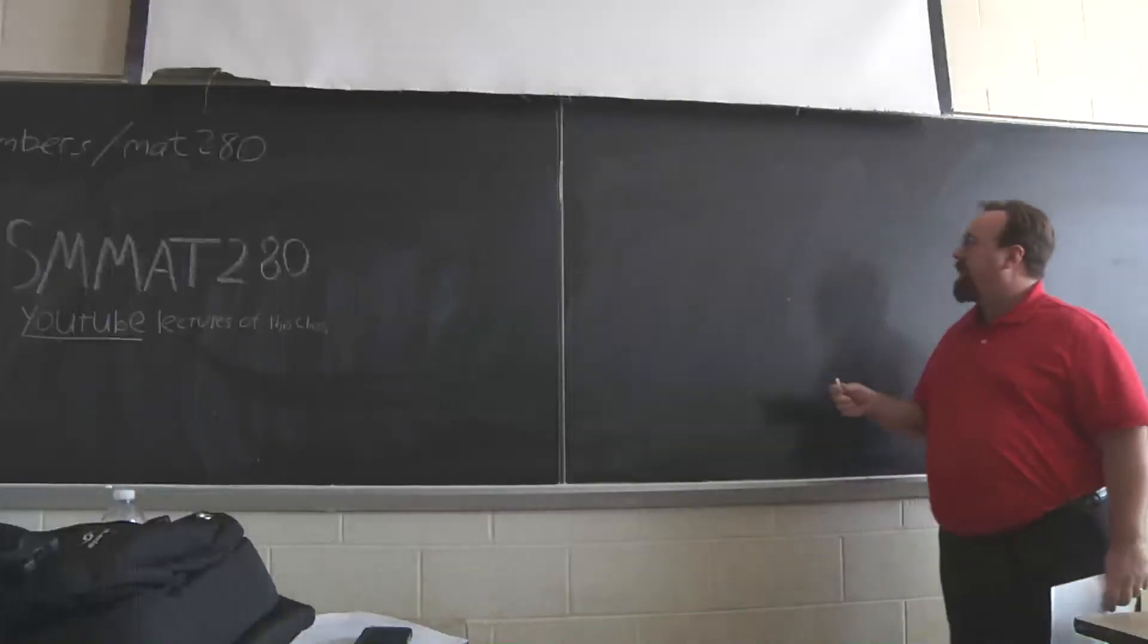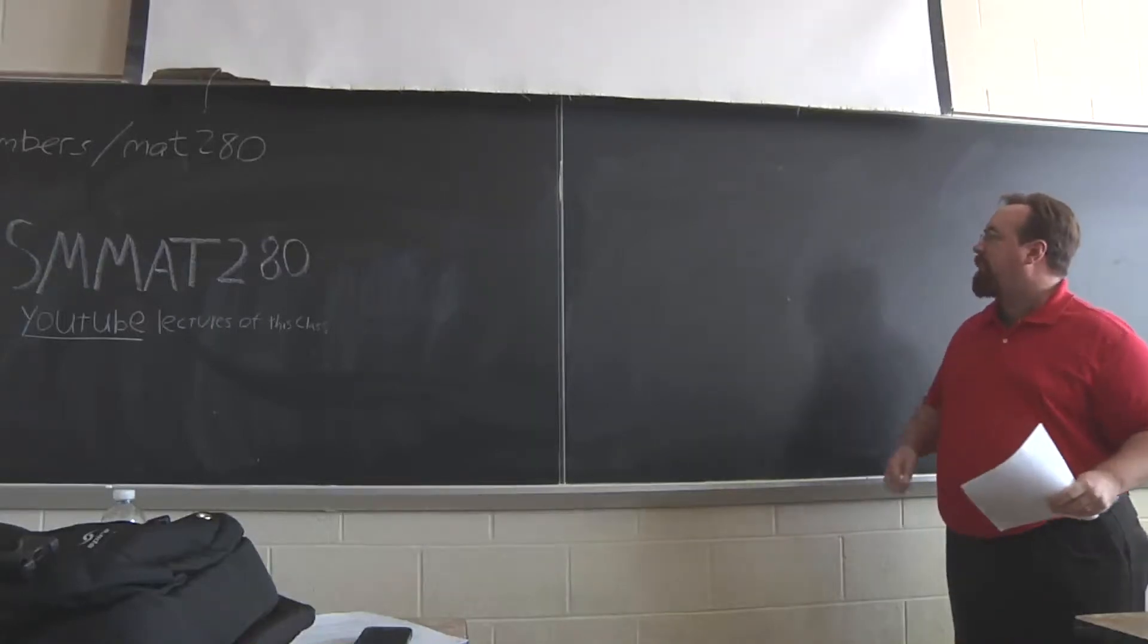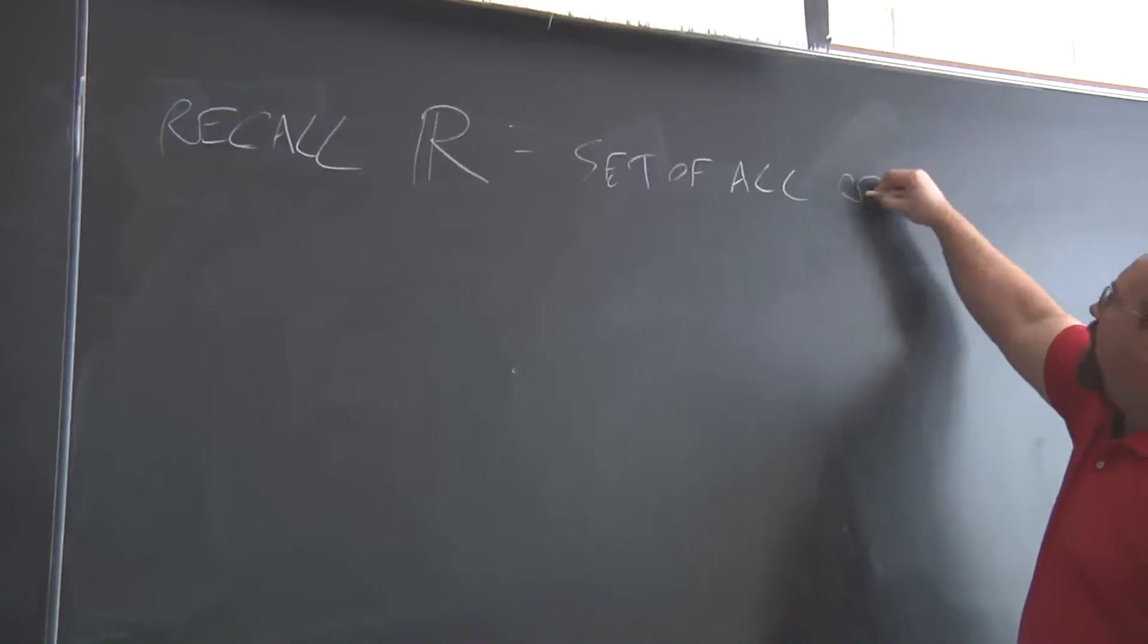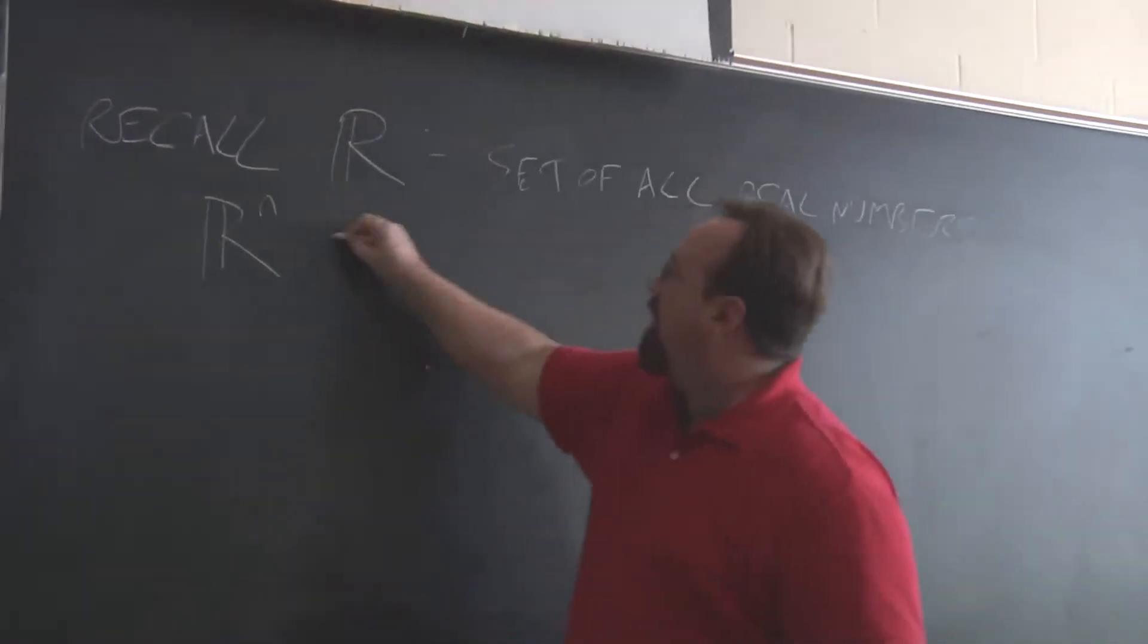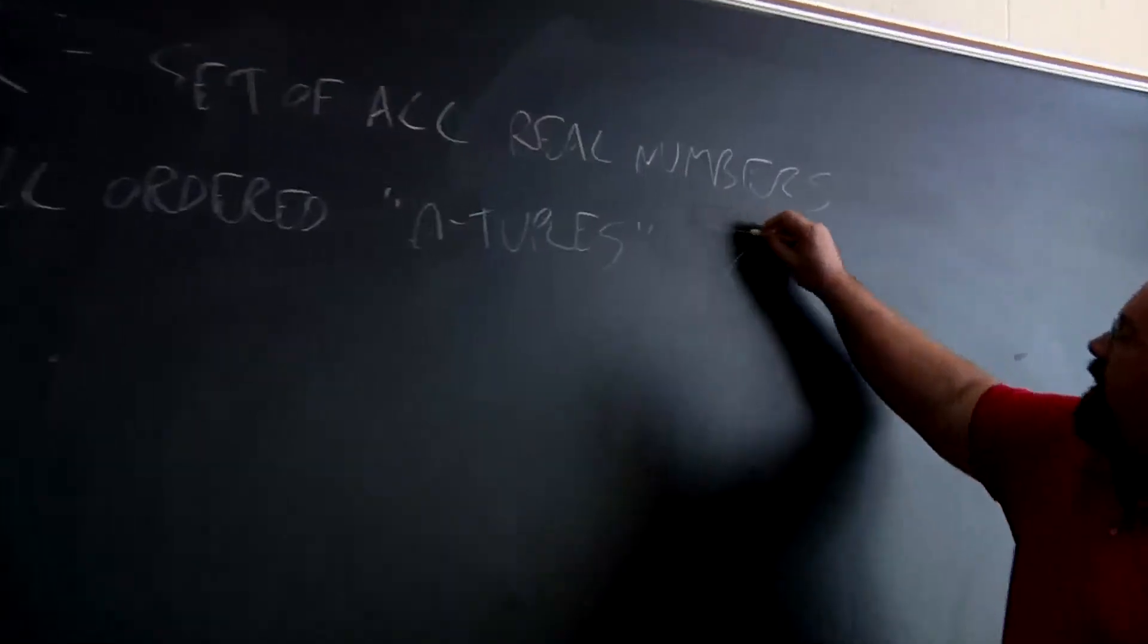Yeah, that's the address of the course site. This notation is for being able to talk about functions of any number of variables and outputting any number of variables. So this R with a double bar here to the left, that's the set of all real numbers. When we put a superscript of n here, that's all ordered n-tuples, a generalization of an ordered pair, which I can write a number of ways.